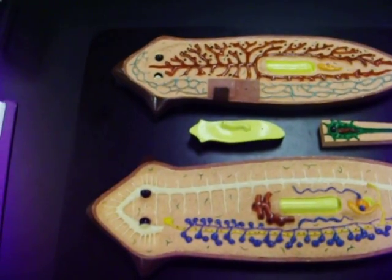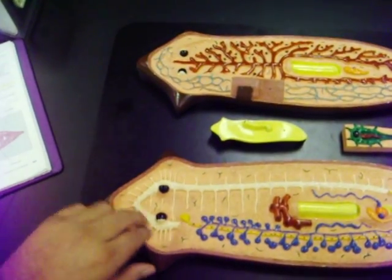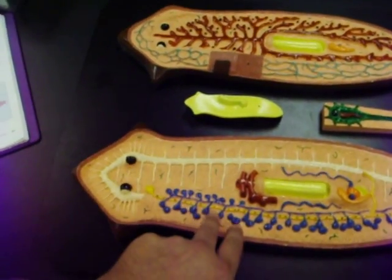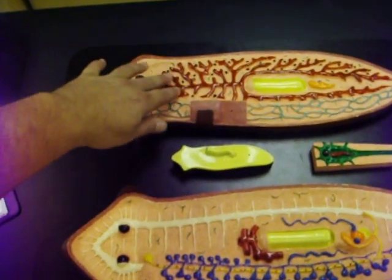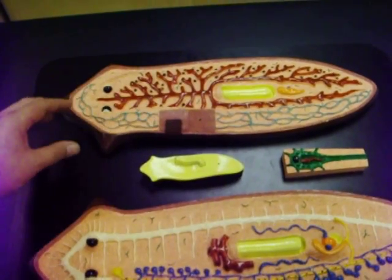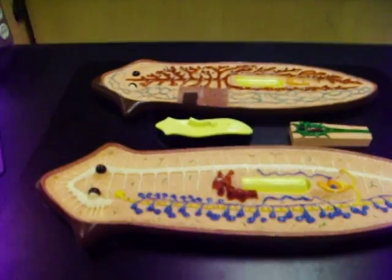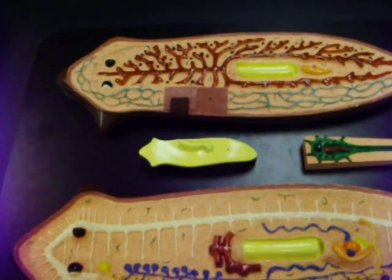It has a brain and nervous system which goes down both sides. And the red here is part of the digestive system. Since it's thin from the side, it doesn't need a circulatory system.